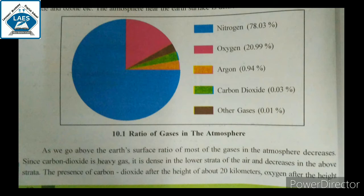After the height of about 20 km, ozone decreases. Oxygen decreases after the height of 110 km, and nitrogen after the approximate height of 130 km is seen decreasing at high altitudes. At high altitudes, there are only light gases like hydrogen and helium.